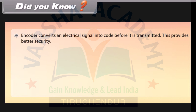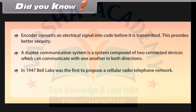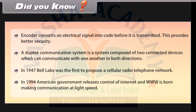An encoder converts an electric signal into code before it is transmitted, providing better security. A duplex communication system is composed of two connected devices which can communicate with one another in both directions. In 1947, Bell Labs was the first to propose a cellular radio telephone network. In 1994, the American government released control of the internet and the World Wide Web was born, making communication at light speed.